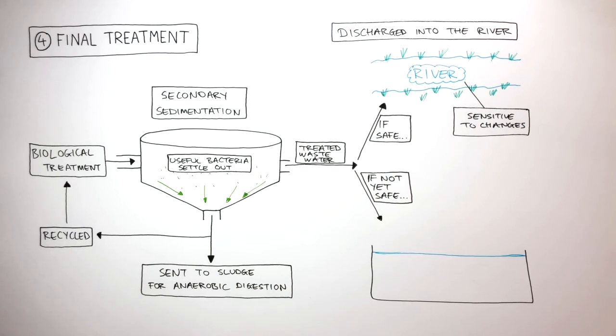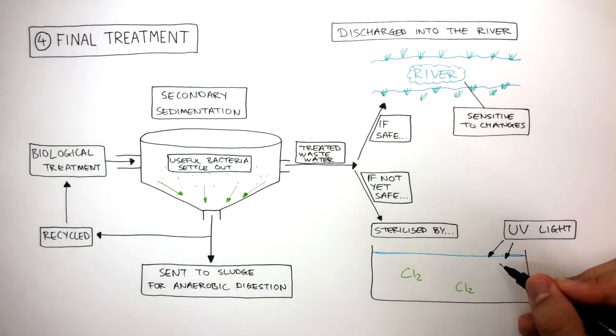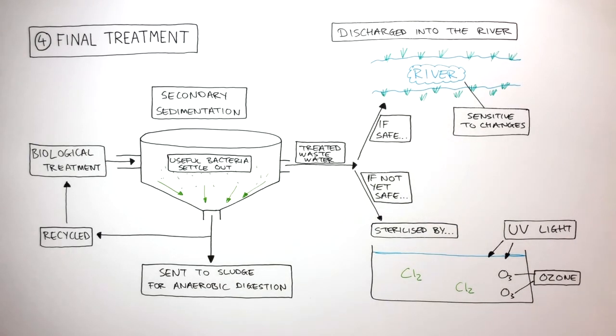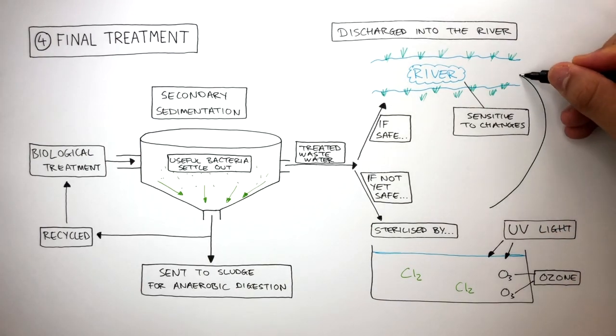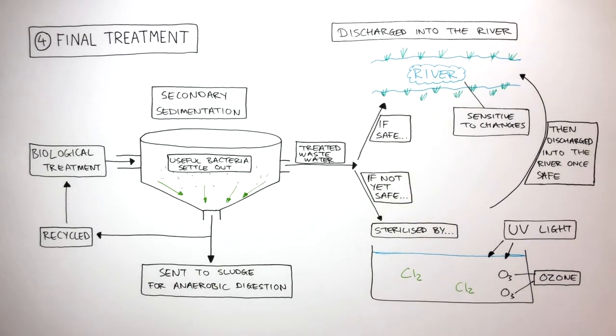If the wastewater is not yet safe to be discharged into a river, it needs to be sterilized by adding chlorine which kills bacteria, using UV light, or adding O3 which is ozone. Only then can the treated sewage water be discharged into the river. Remember, chlorine is toxic and has the ability to kill fish and other organisms, badly affecting the environment.